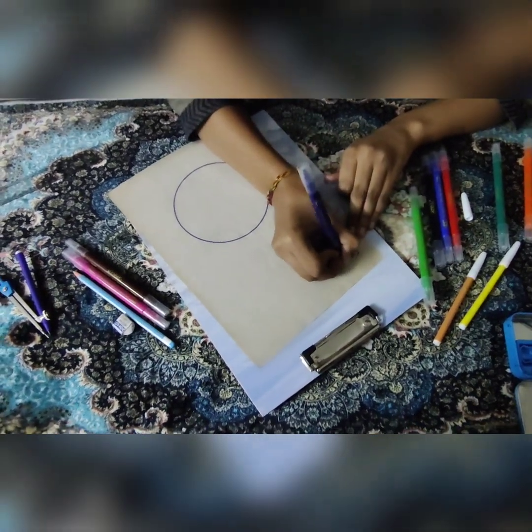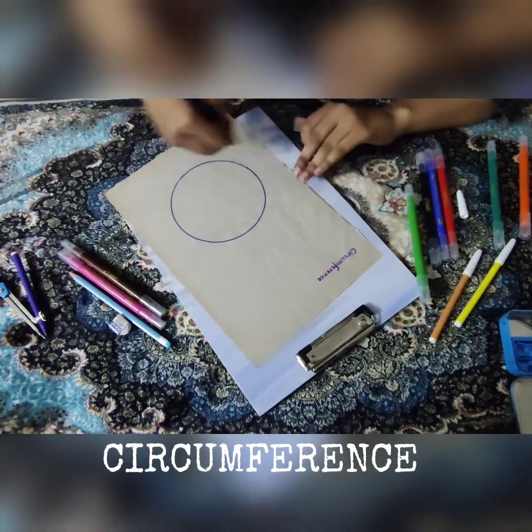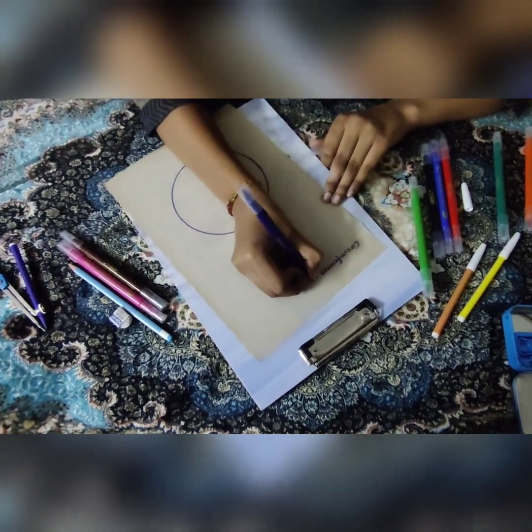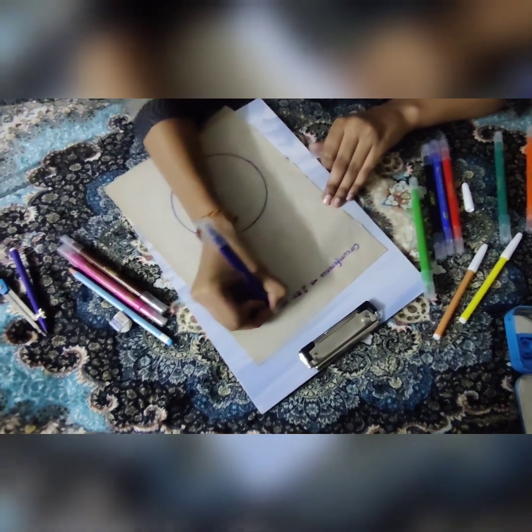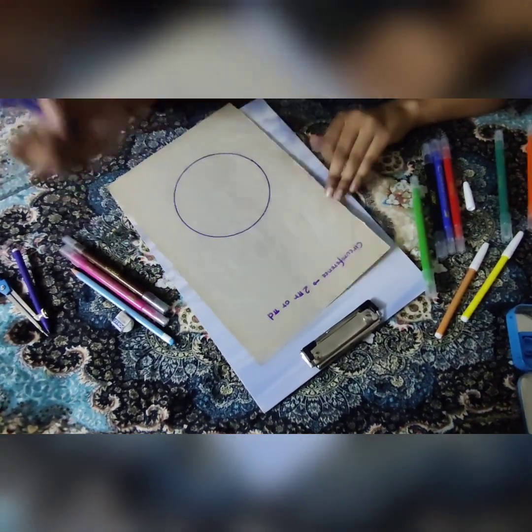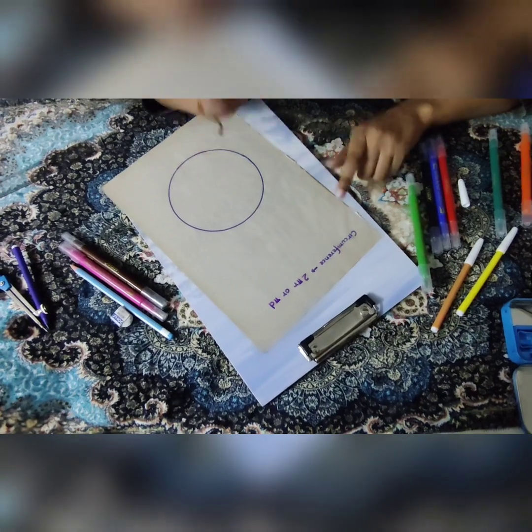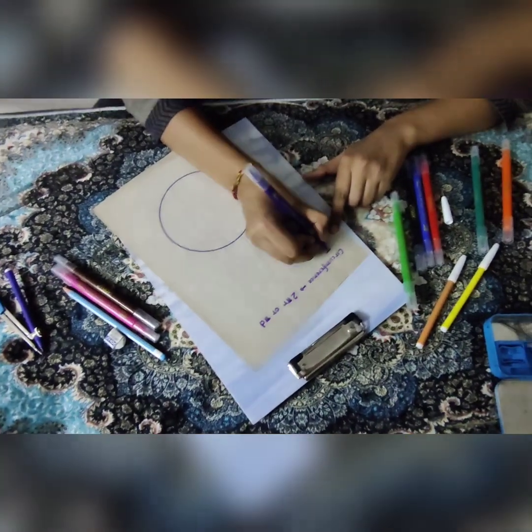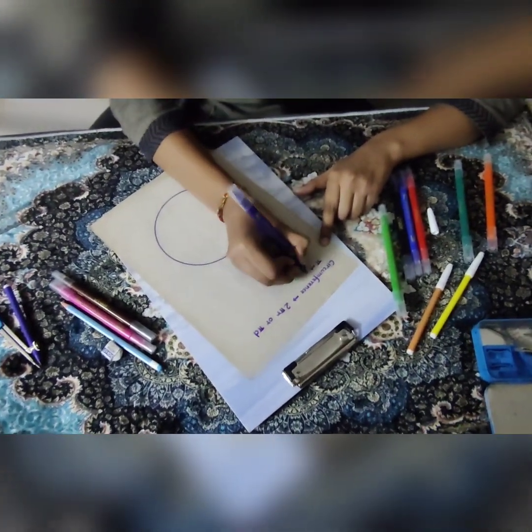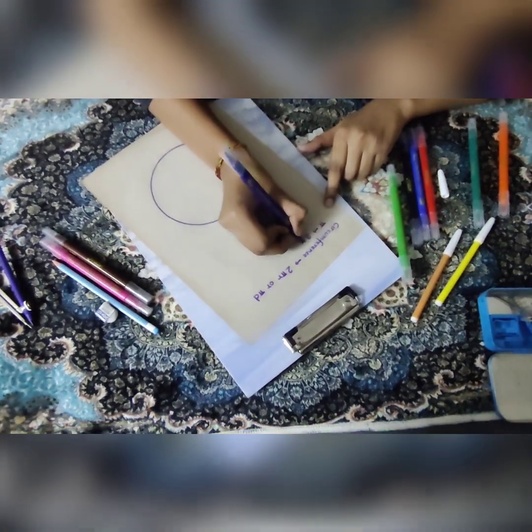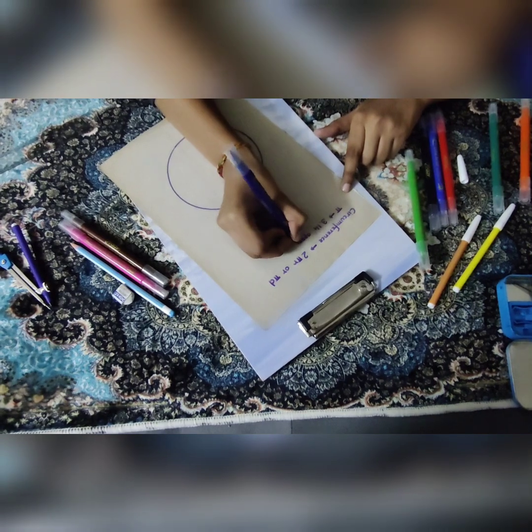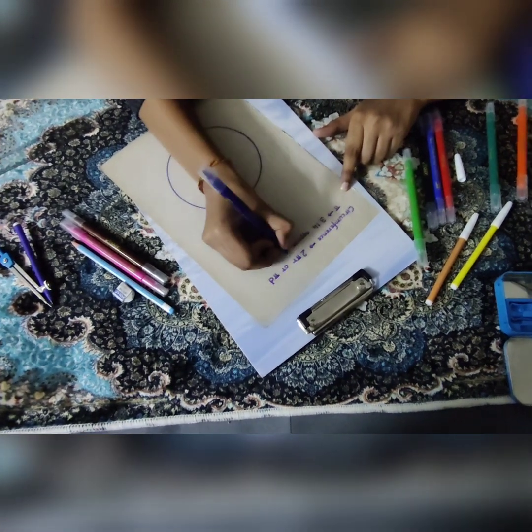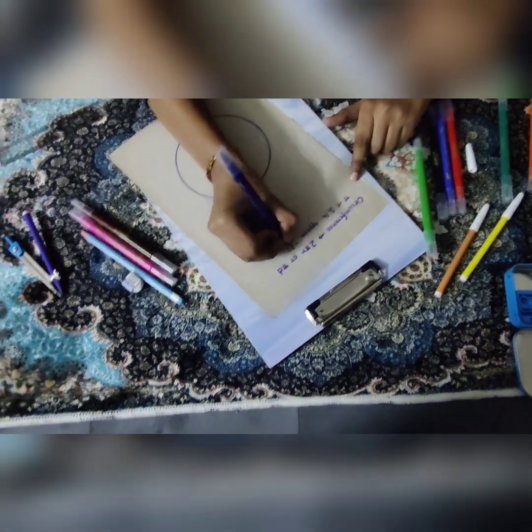Now the circumference is basically the perimeter of the circle and its formula is 2 pi r or pi d, where r stands for the radius and d stands for diameter. The value of pi that is taken is 3.14 and its approximate value in fraction is 22 by 7.